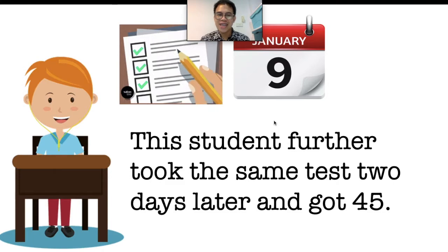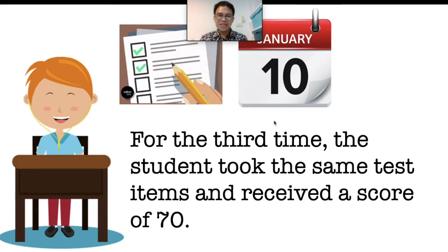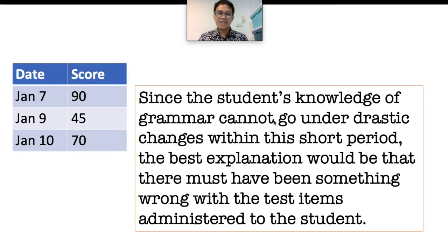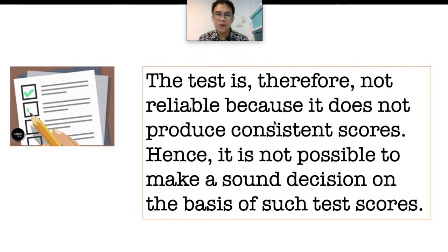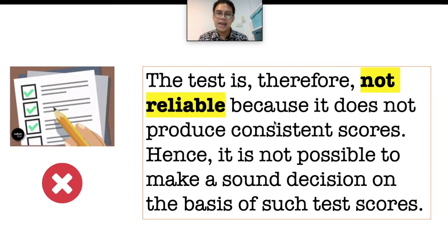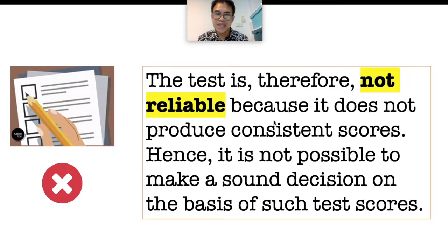This student further took the same test two days later and got a score of 45. For the third time, the student took the same test and received a score of 70. Since the student's knowledge of grammar cannot go under drastic changes within this short period, the best explanation would be that there must be something wrong with the test items. The test is therefore not reliable because it does not produce consistent scores, and it is not possible to make a sound decision on the basis of such test scores.